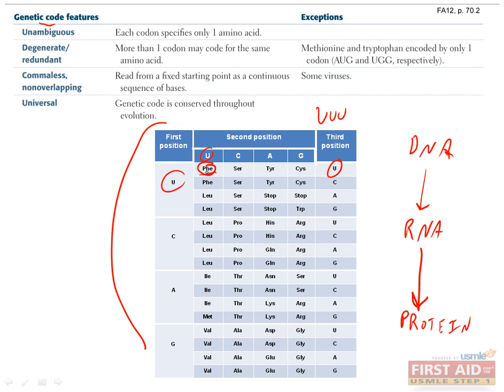Most amino acids are encoded by multiple codons. For example, phenylalanine is encoded by UUU and UUC. This means that the code is degenerate or redundant, since multiple codons code for the same amino acid.